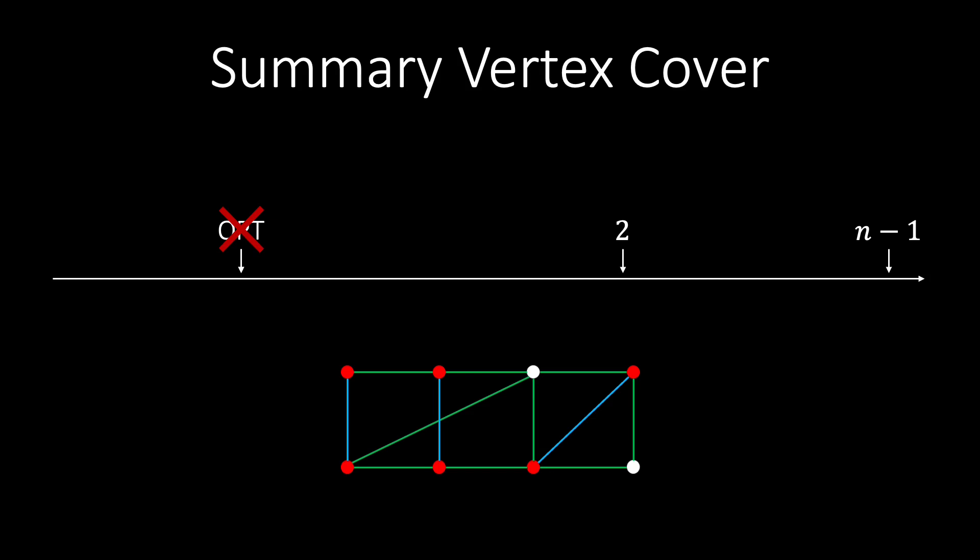But what about the gap between 1 and 2? Currently there are actually no better approximation algorithms, so a 2 approximation is the best known approximation algorithm. There is also a known lower bound that proves that no approximation algorithm better than 1.3606 exists. This still leaves the gap between 1.3606 and 2 to be explored.